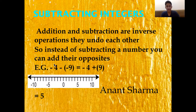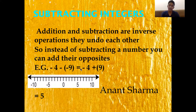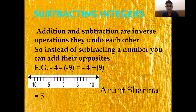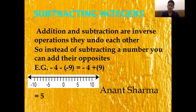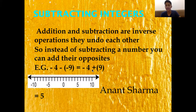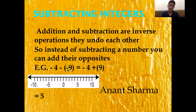Let's take an example: subtract minus 4 from minus 9. We write it as minus 4 minus minus 9, which converts into minus 4 plus 9, because the two minus signs combine to become a plus sign. That's because there is an even number of signs — 2 is even. Now if there were 3 minus signs, it would become minus 4 minus 9, because 3 is an odd number.